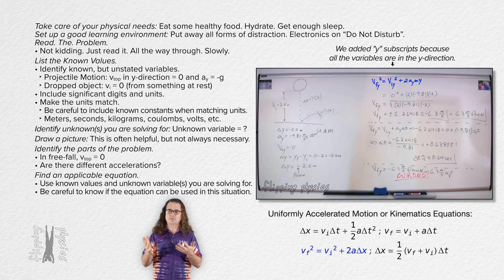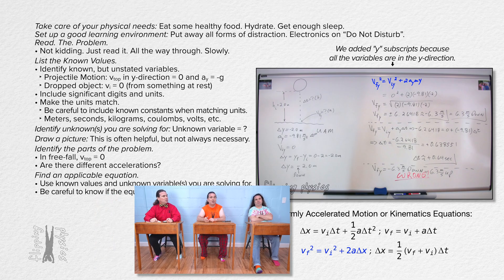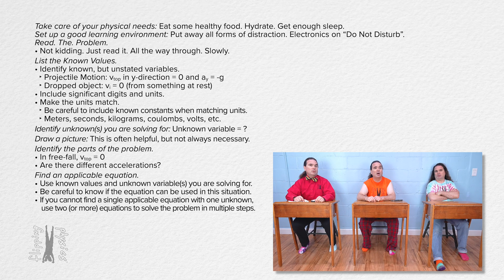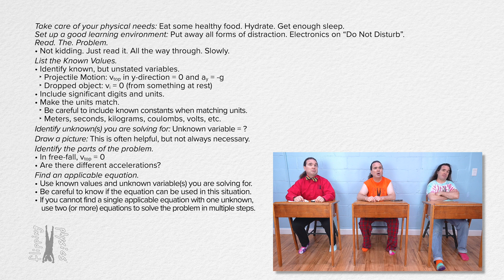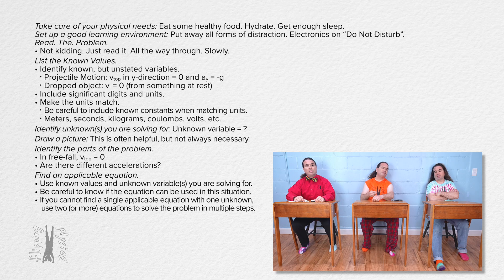But, Mr. P? Yes, Bobby? What if you cannot find one of the uniformly accelerated motion equations, which contains all three known variables and the one unknown variable? Then you use one of those equations with the three known variables in it, solve for a different unknown variable, and then you have four known variables you can use to find an equation to solve for the unknown variable. Oh, right. Yeah. Thanks, Beau.